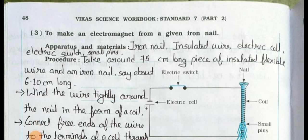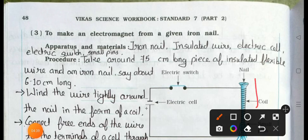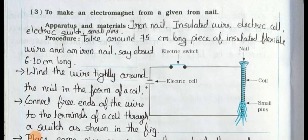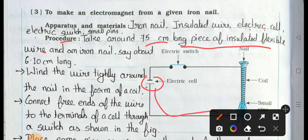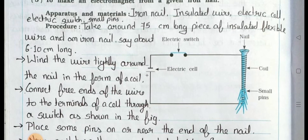Question number three: To make an electromagnet from a given iron nail. See here is the iron nail. Apparatus and materials: iron nail, insulated wire, electric cell, electric switch, and small pins. Take around 75 cm long piece of insulated flexible wire. See this one is the flexible wire, here is the electric cell, here is the electric switch, and here is the nail with coil wrapped, and small pins.